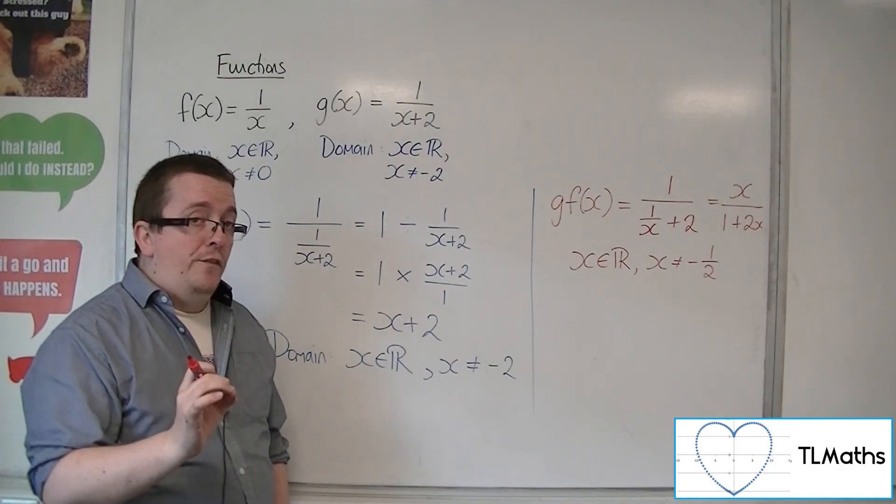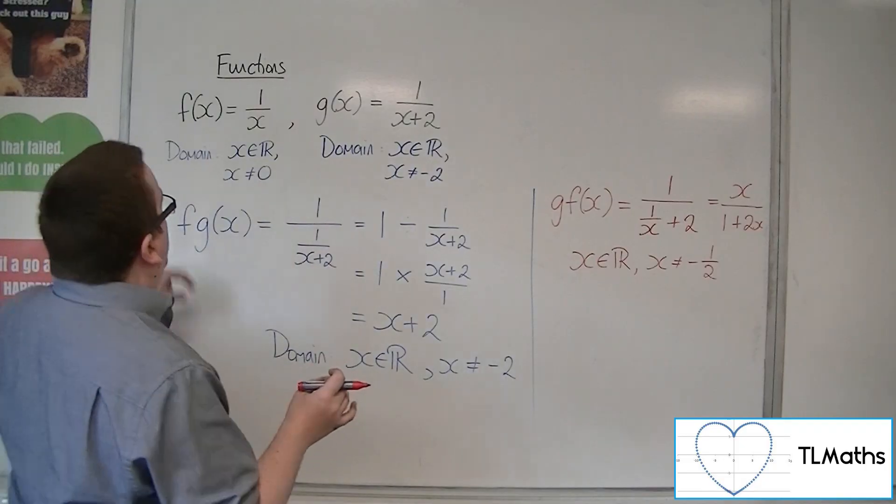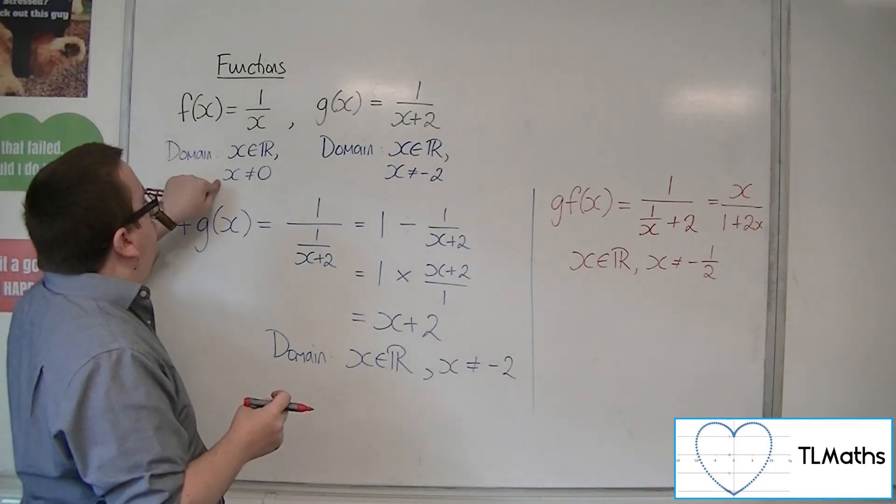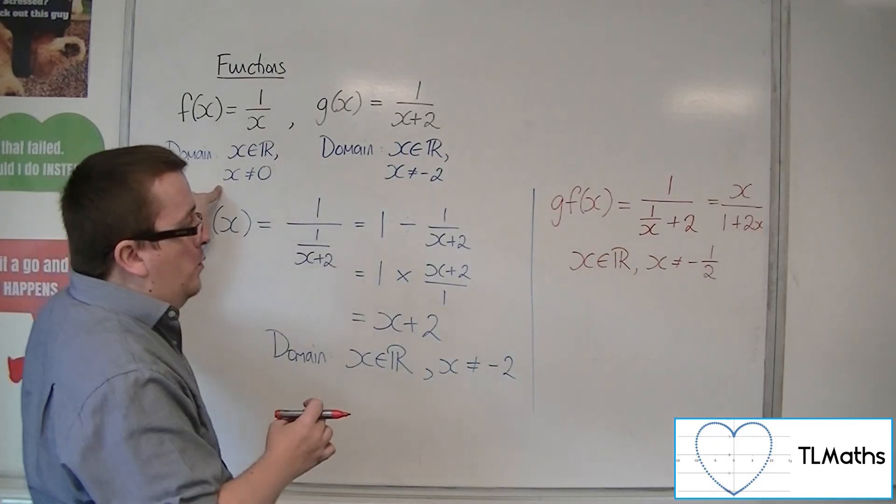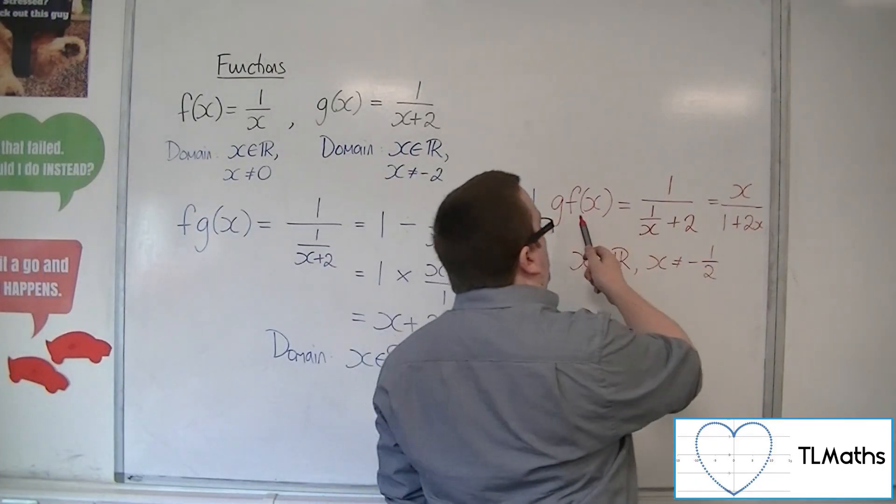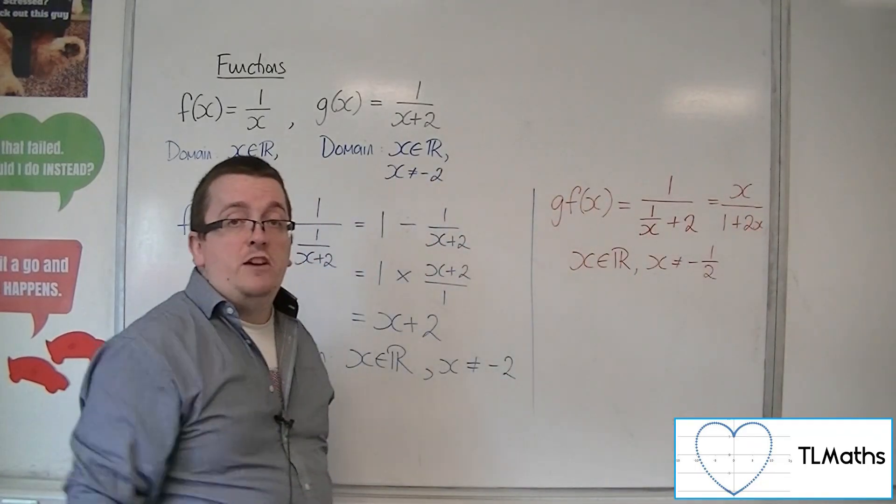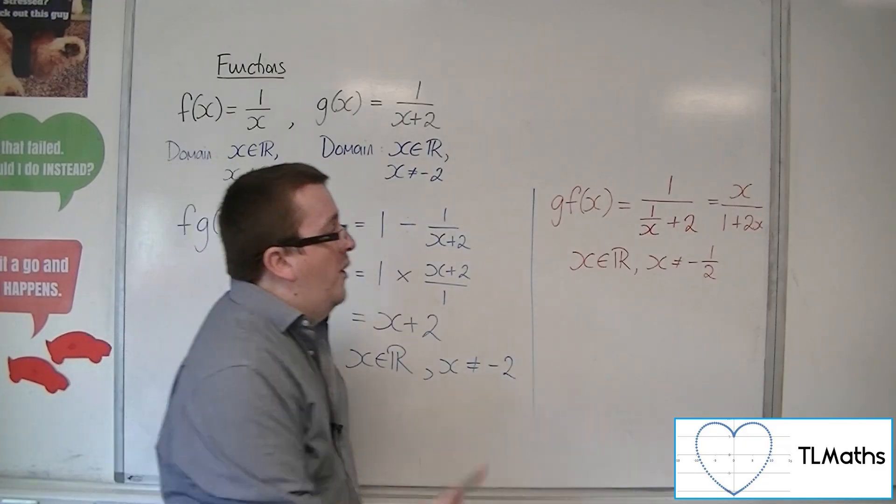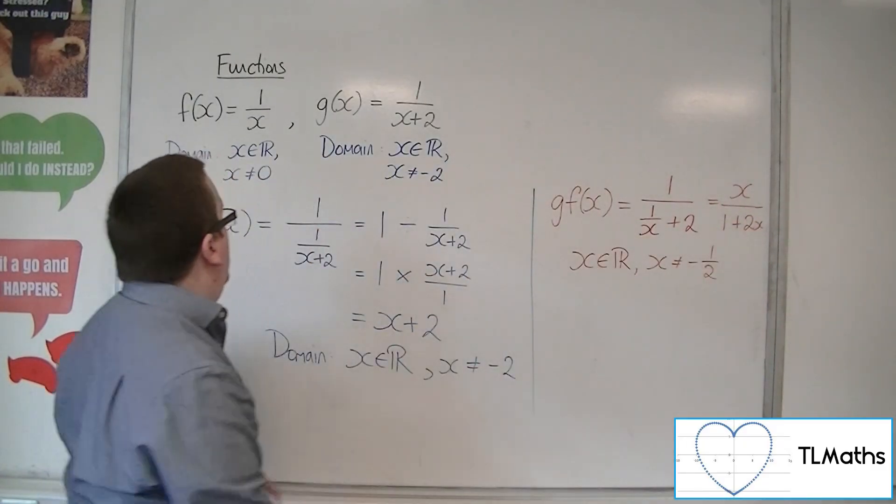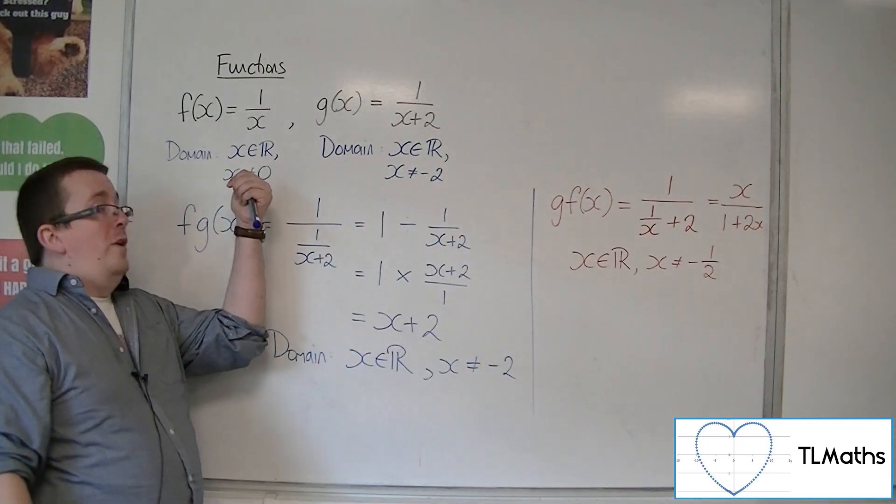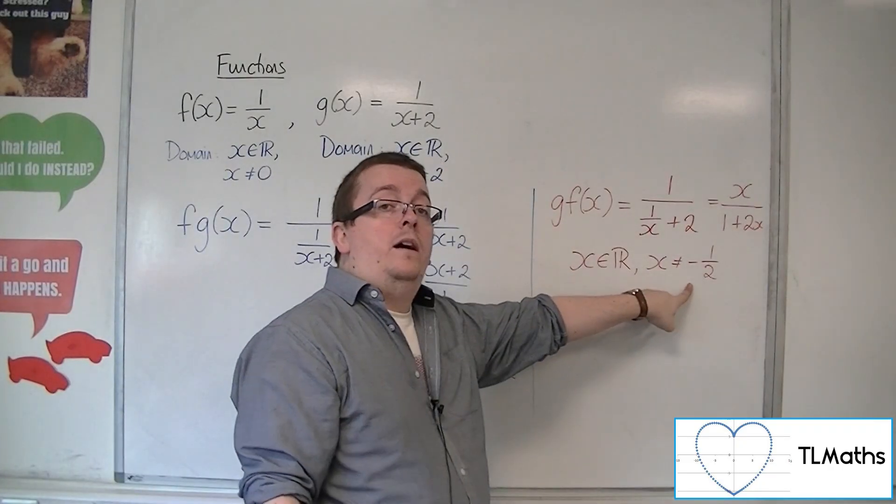However, f of x brought its own baggage. F of x was restricted because x could not be 0. So although I could go, well, what's g f of 0? It's 0 over 1 plus 0, so that should just be 0. That seems fine. Although it seems to work fine there, because for f of x, x couldn't be 0, x can't be 0 here either.